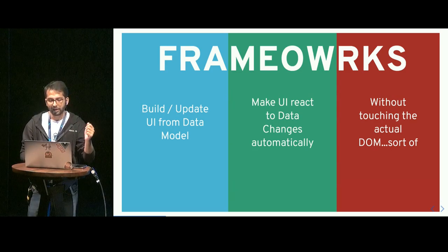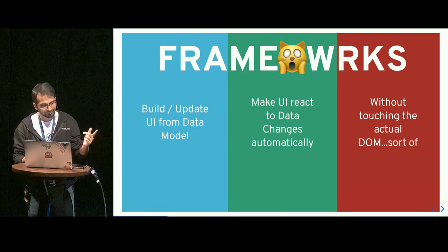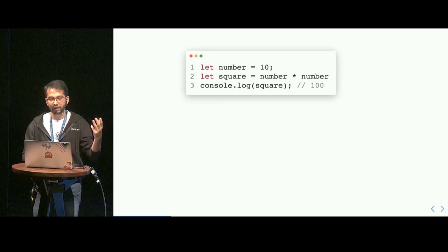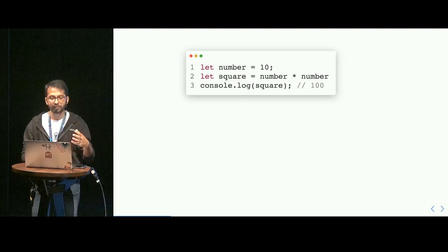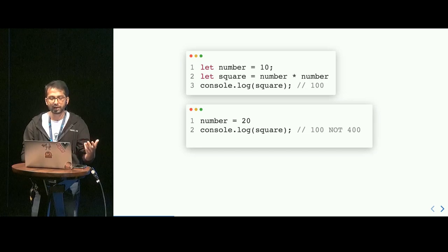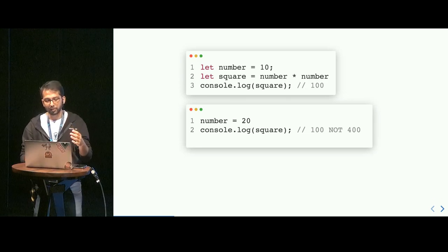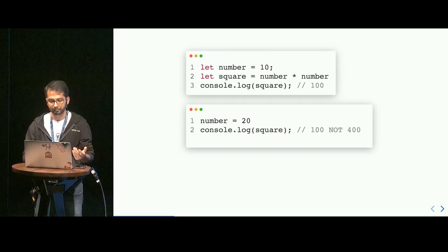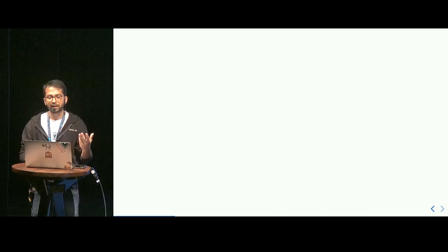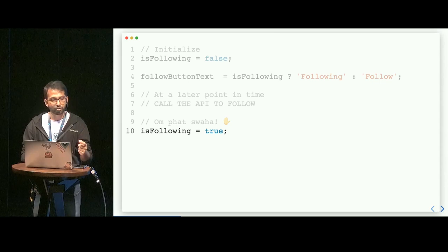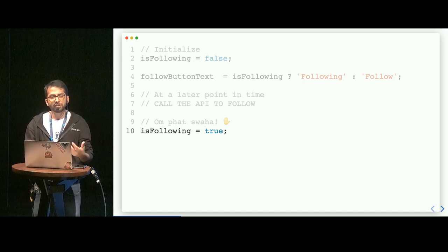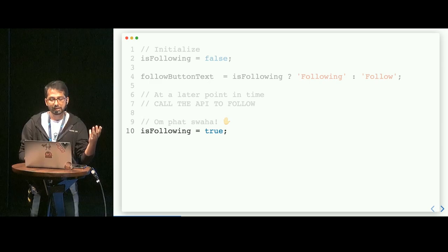They also make our UIs react to data changes automatically and give us tools to do all these magical things without ever touching the DOM. The question is — how do they do it? Because if we know even a little bit of JavaScript, the problem becomes apparent. Here we have a variable `number` initialized to 10, and we calculate `square` by multiplying number by itself. We get 100. But if we change number to 20, the value of square doesn't automatically update to 400. Changing number hasn't affected square. And that is why all these frameworks must be doing something extra — they build a reactivity system.